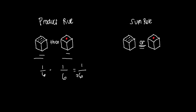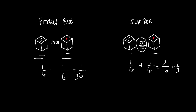That gives us one over thirty-six. The sum rule, on the other hand, is used when we want to know the probability of either of two events happening. For example, what is the probability of getting either a six or a one if you roll a die? To get this, we add the probability of getting a six and the probability of getting a one, which gives us two over six, or one third.